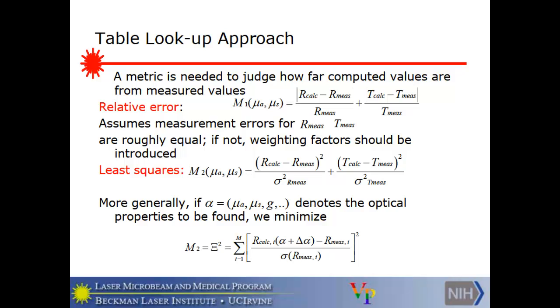So this assumes the measurement errors for these two measurements are roughly equal. If not, the factors should be introduced that tell you what the unlikelihood or likelihood of getting the measurements you got is. So you have to introduce the variance of the measurements, which you know and can do. And that's an inverse weighting function. And that least squares minimization gives you a figure that measures the error in the table lookup. And more generally, if you have a whole vector of parameters to find optical properties, we minimize the sum over all of them of this relative measure, square it to get a second order quantity and call that chi square.